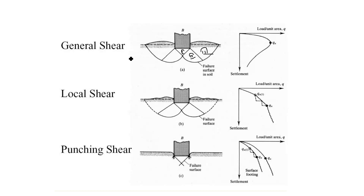In local shear failure, only two distinct zones are observed, and Zone 3 - Rankine's passive zone - develops imperfectly, so only slight ground heaving can be seen. On the load versus settlement curve, there are various points where the slope behavior is changing, meaning multiple failures occur in local shear failure and correspondingly multiple ultimate bearing capacity values can be obtained.